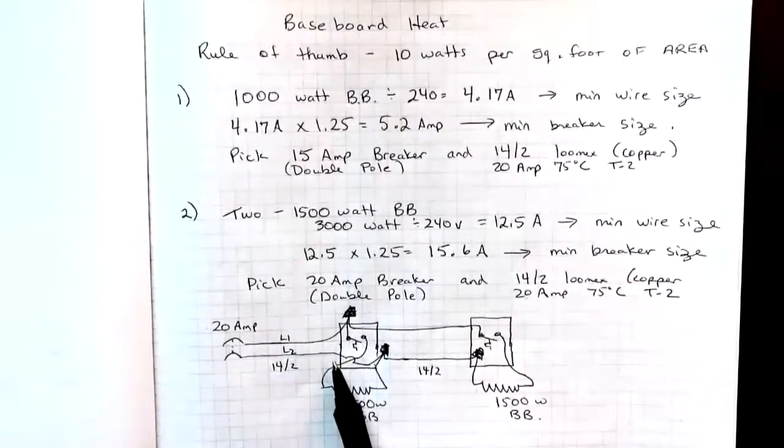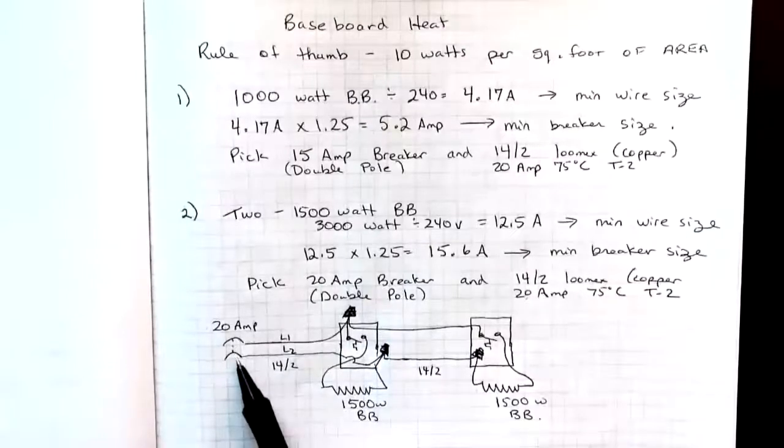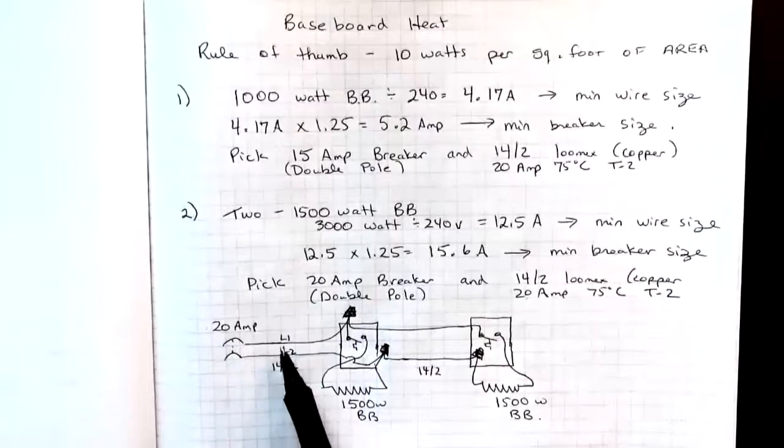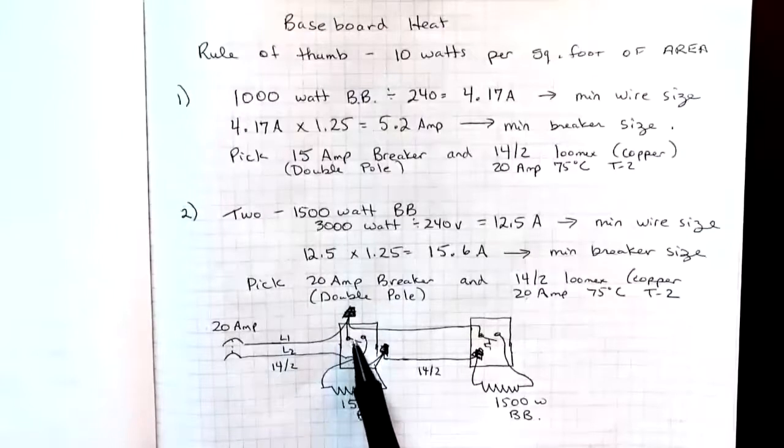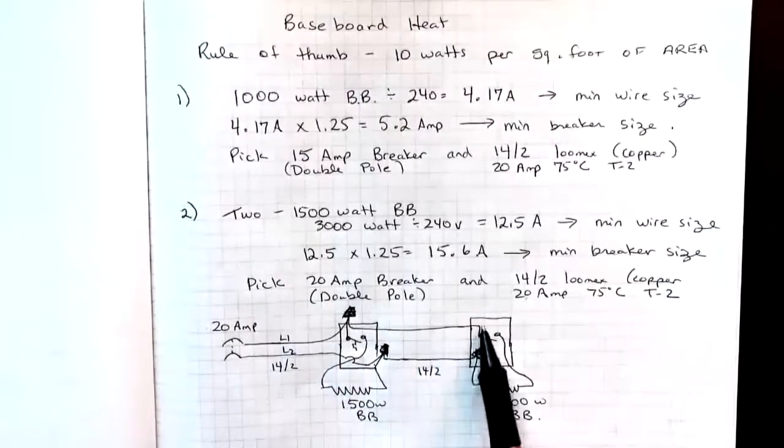This is what the wiring diagram would look like for this. So we'd have to drive right onto the thermostat and also continue on to the second thermostat for the second baseboard heater.